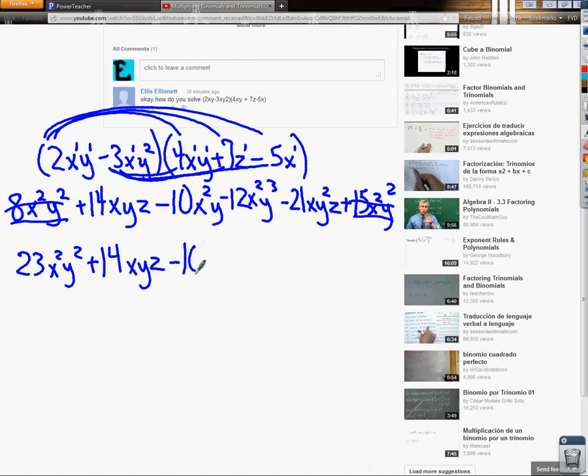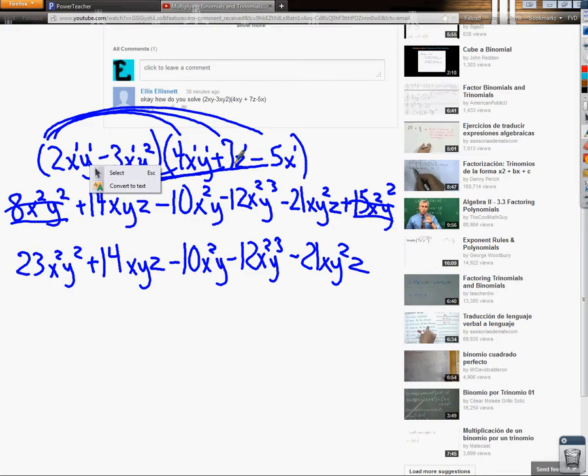14xyz minus 10x squared y minus 12x squared y to the third minus 21xy squared times z. And those can be organized in certain ways. Some people like to have the z's all together. I originally thought that the 14 and the negative 21 went together, but when I do the 14 thing here, I get 1x, 1y, and a z, whereas with the other one, I end up with x, y squared, and z.